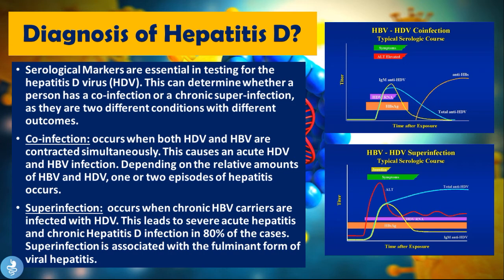A super-infection occurs when chronic hepatitis B carriers are infected with HDV, leading to severe acute hepatitis and chronic hepatitis D infection in about 80% of cases. Super-infection is associated with a fulminant form of viral hepatitis. Comparing the two graphs, in super-infection there is much more severe HDV RNA and HBsAg elevation, early peaking of liver enzymes, and total anti-HDV steadily increases — whereas in a co-infection it slowly decreases.